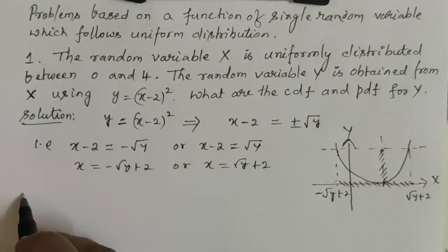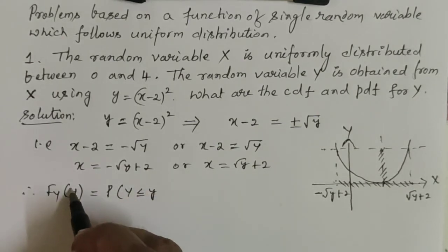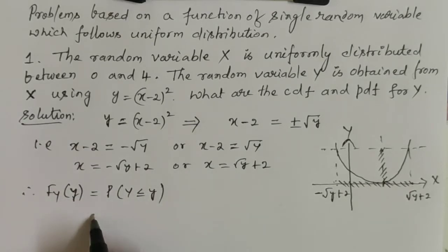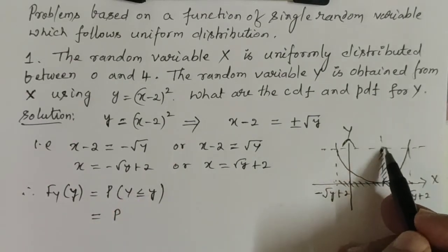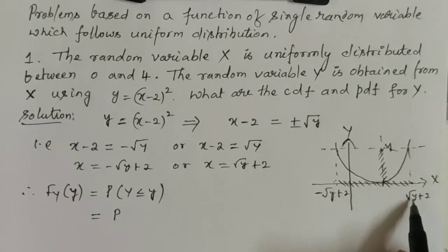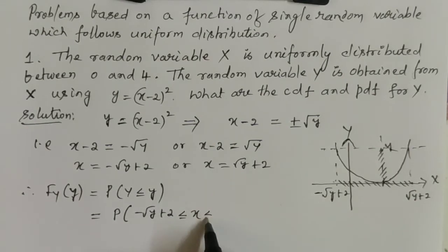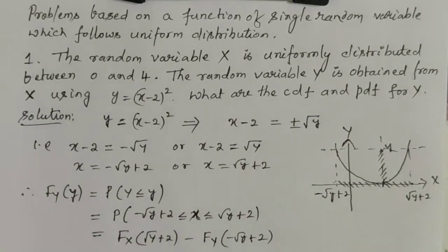Therefore, F_Y(y) = probability that Y ≤ y. This will be equal to probability that if Y ≤ y, the value of X lies between 2 - √y and 2 + √y. Therefore, we can write it as probability that 2 - √y ≤ X ≤ 2 + √y, which is equal to F_X of the upper limit minus F_X of the lower limit.